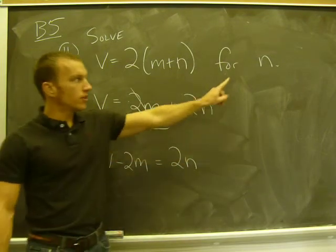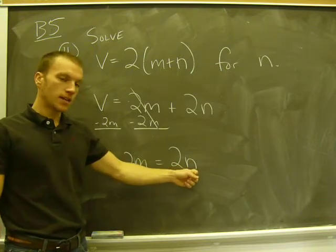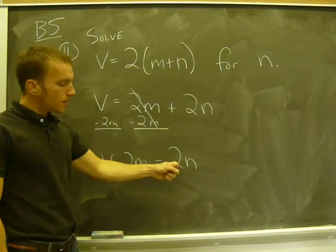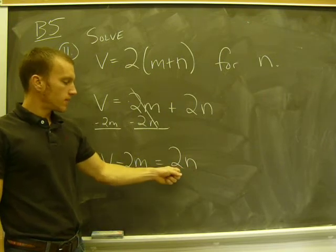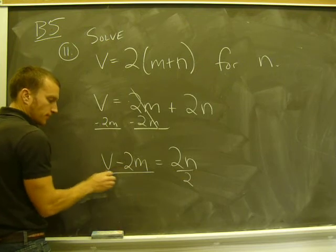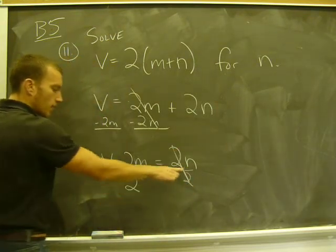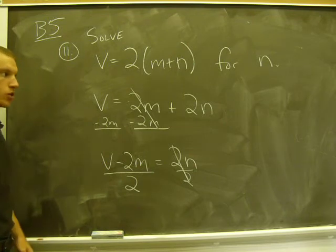Okay, so again the goal here is to solve for n. I'm one step from my solution because I have 2 times n equal to that. So to get n by itself, I do what I've always done: divide by the coefficient. That's my last step. Divide by 2, and that's it. N by itself: n equals v minus 2m over 2.